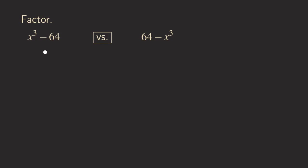Now we'll look at two examples side by side: x³ − 64 and 64 − x³. I'm showing these together because I want to show how to handle the situation when the two terms are in a different order. In the first, x cubed comes first; in the second, 64 comes first. The reason for the difference is that subtraction is not commutative — just like 5 − 2 and 2 − 5 give opposite results, so the answers are almost the same but with some differences.